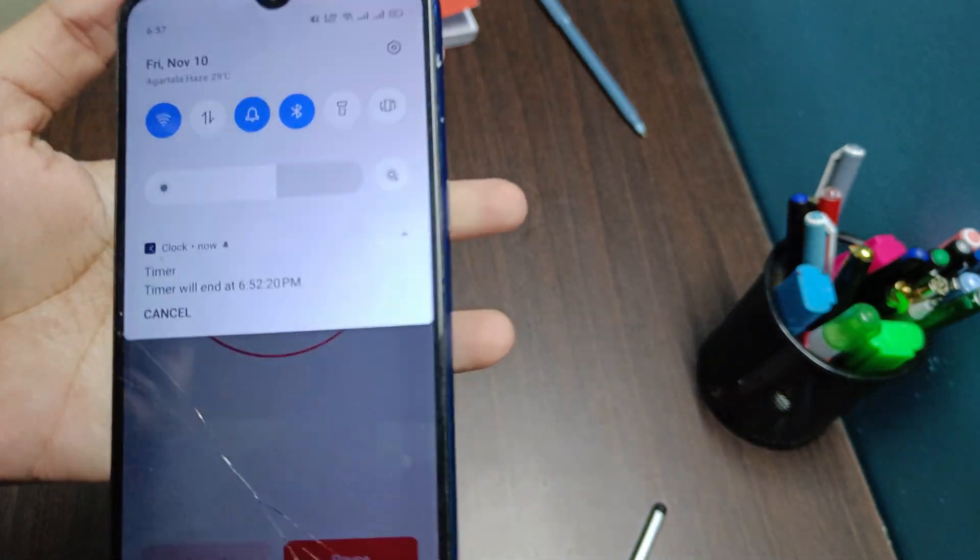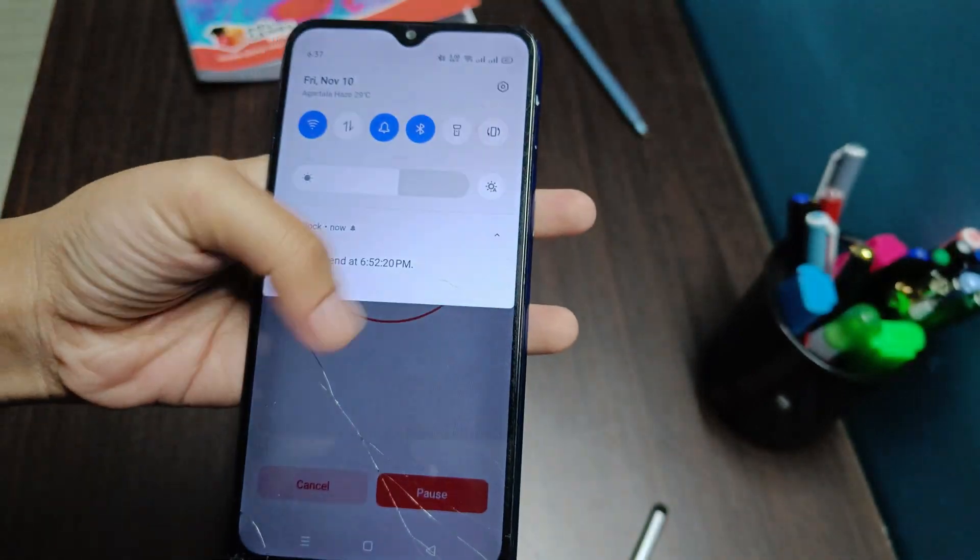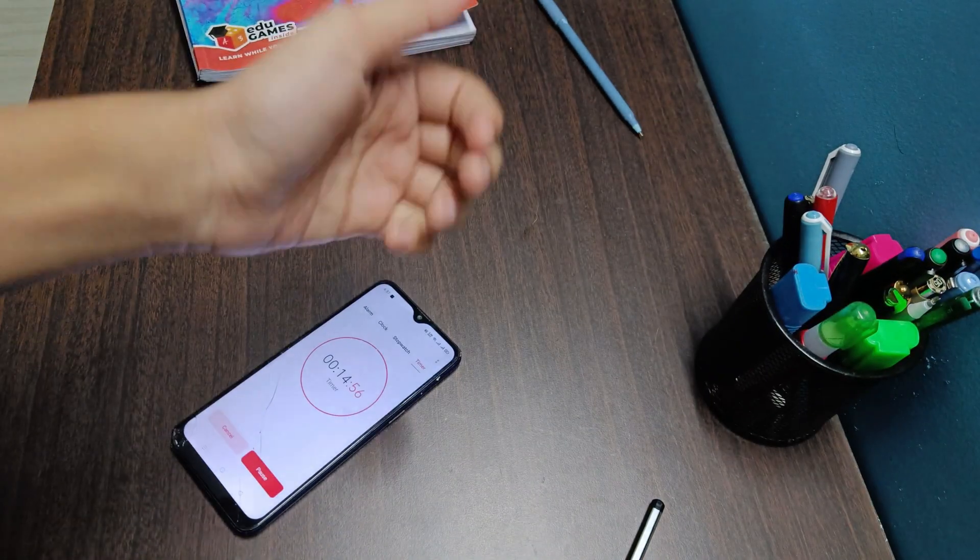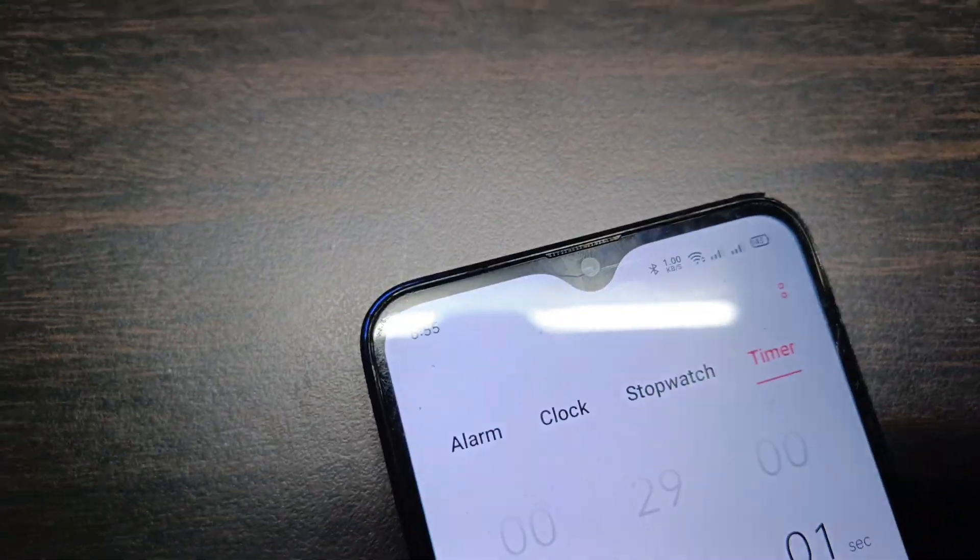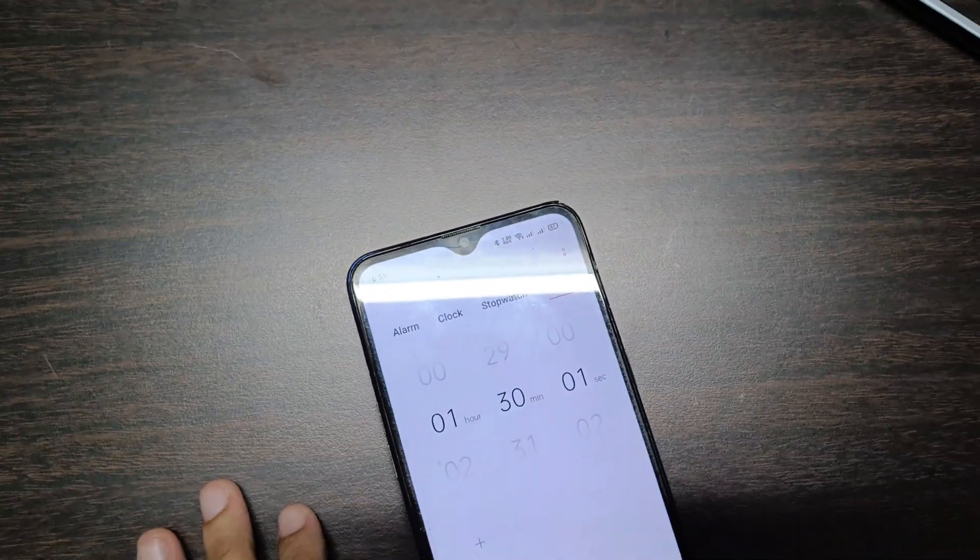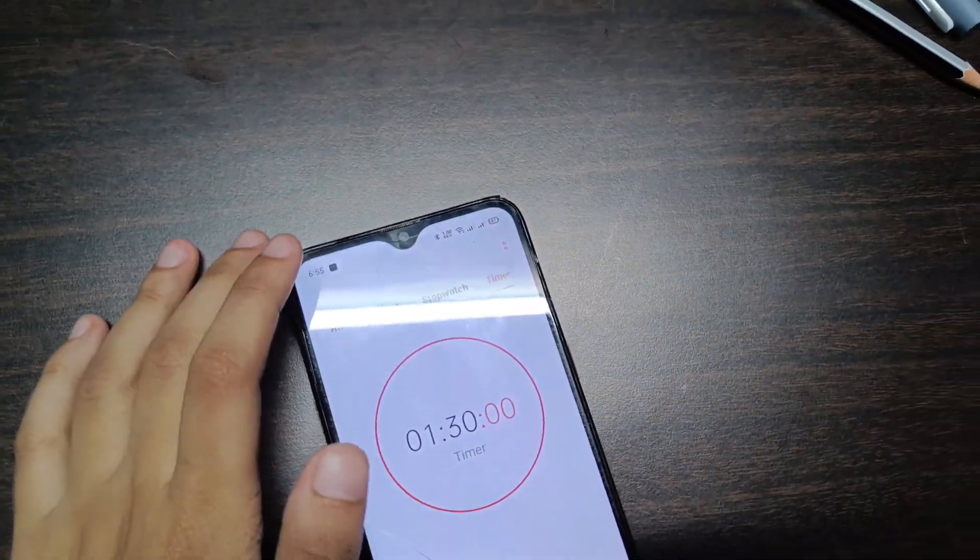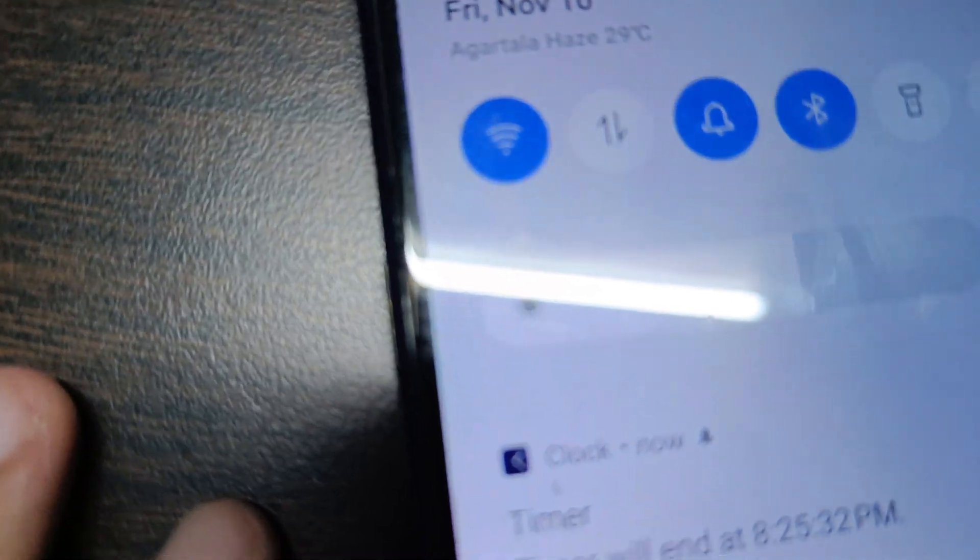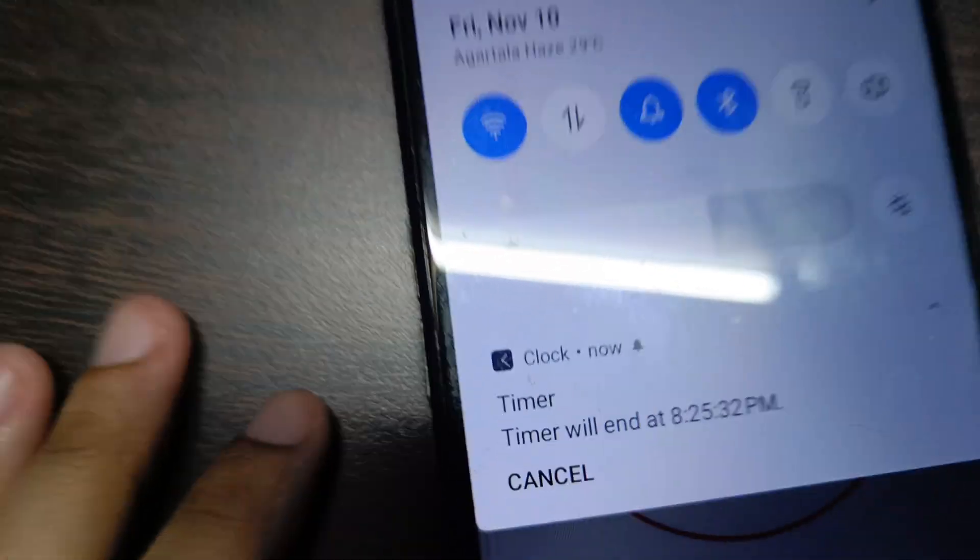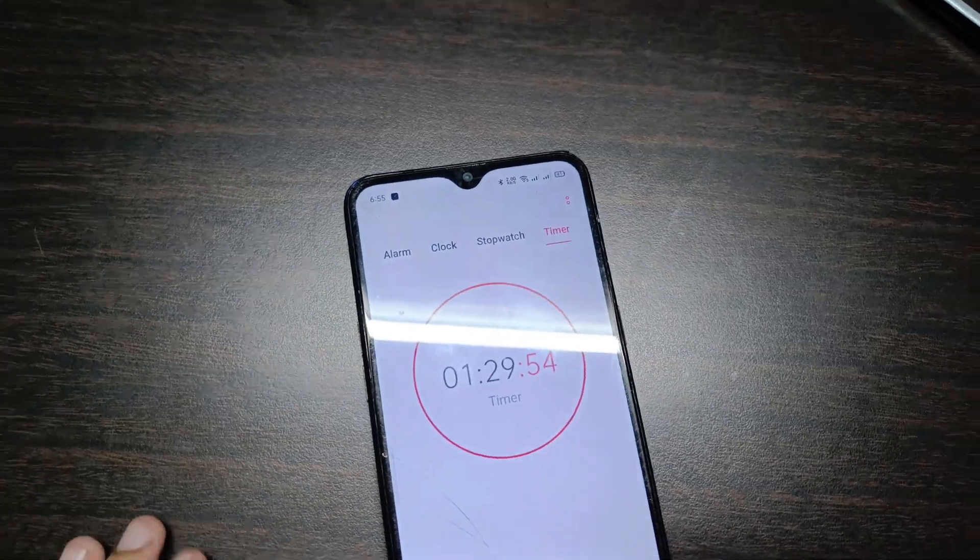So this timer will end at 6:52, so I'll start studying maths at 6:52. Currently 6:55, and I'll put a timer of one hour thirty minutes. This timer will end at 8:25. Let's start.